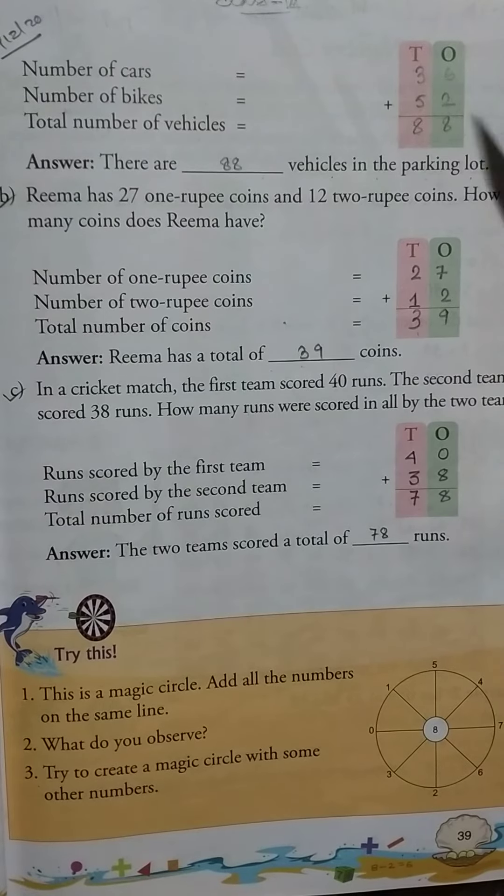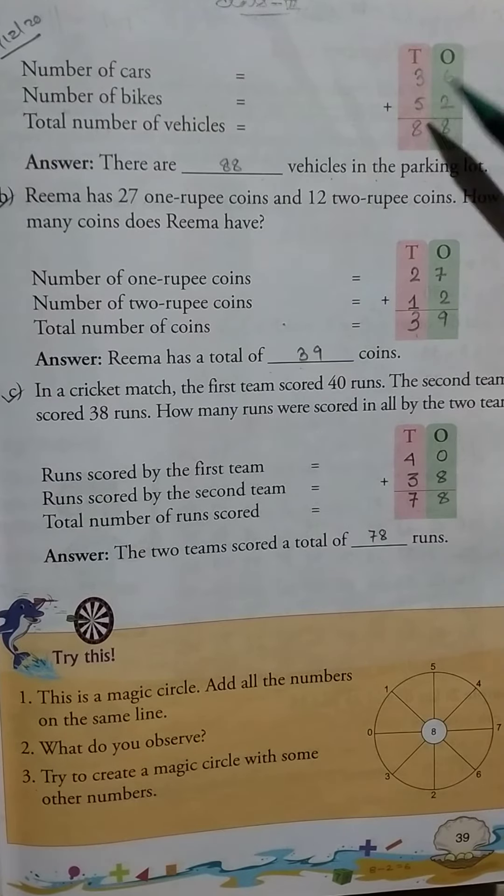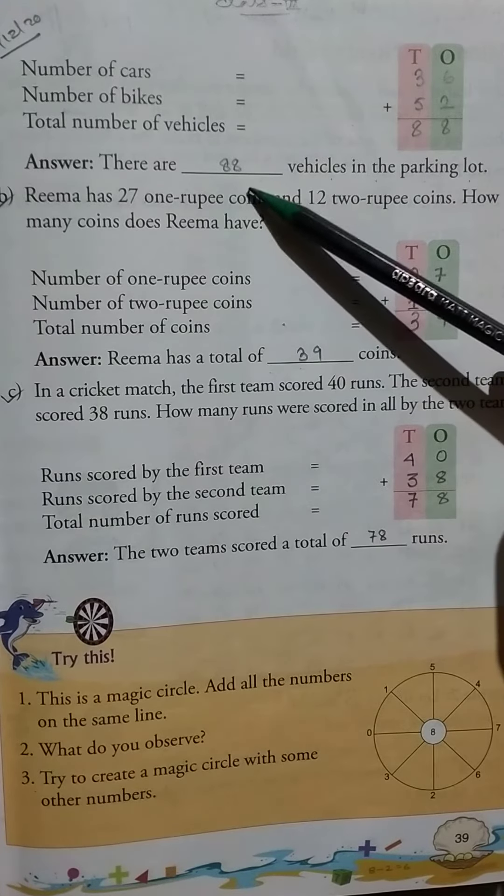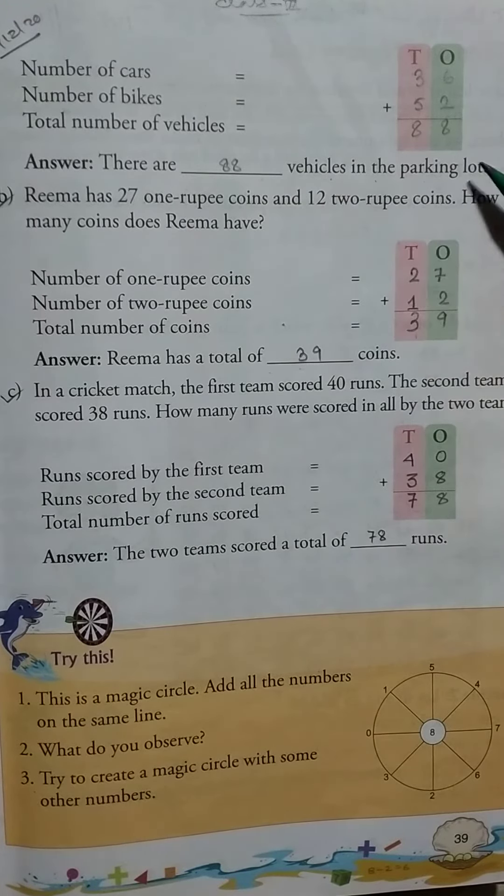So here, number of cars 36, number of bikes 52. Total number of vehicles 88. There are 88 vehicles in the parking lot.